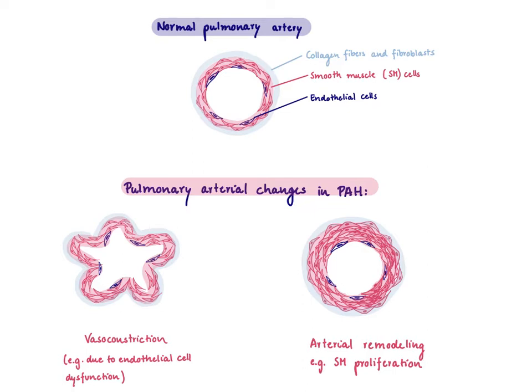There might also be arterial remodeling — for example, smooth muscle hyperproliferation. In the end, you're going to end up with a more narrow artery.